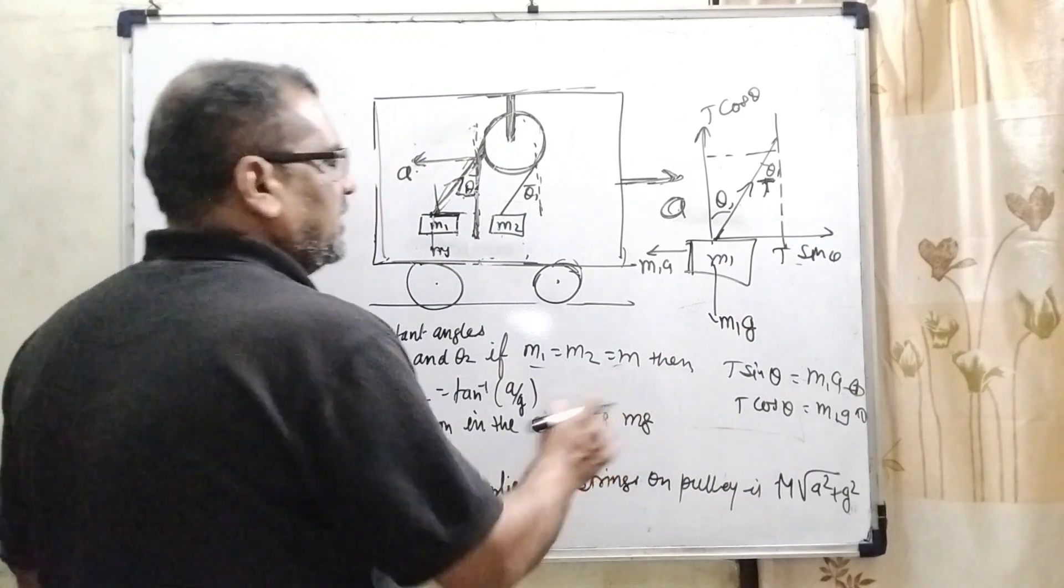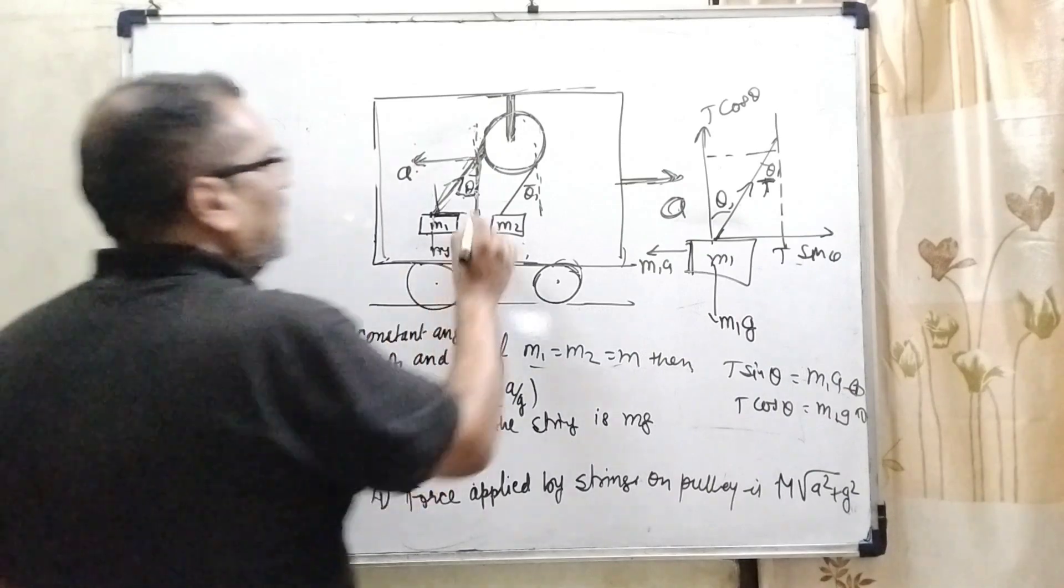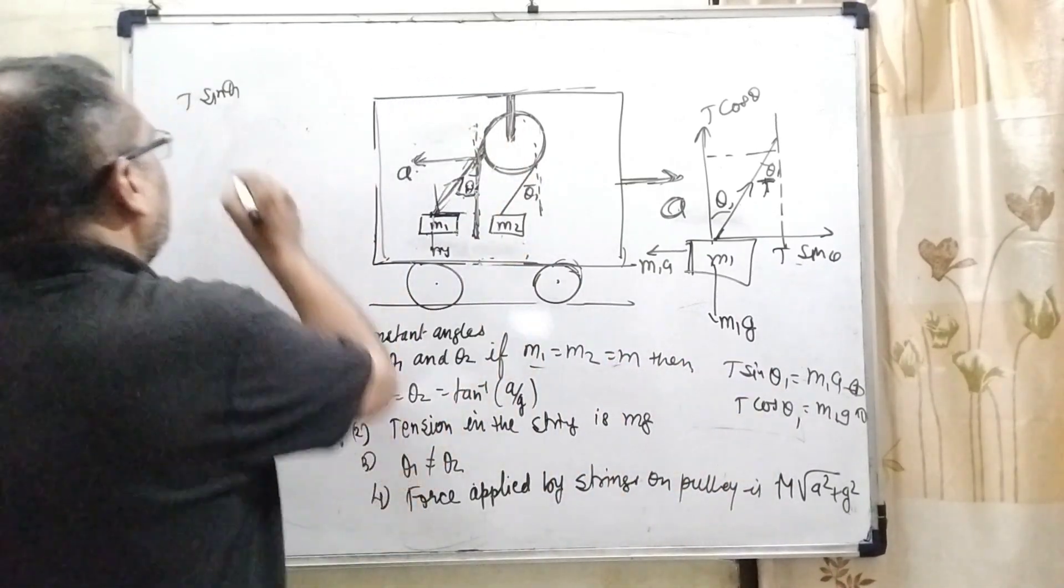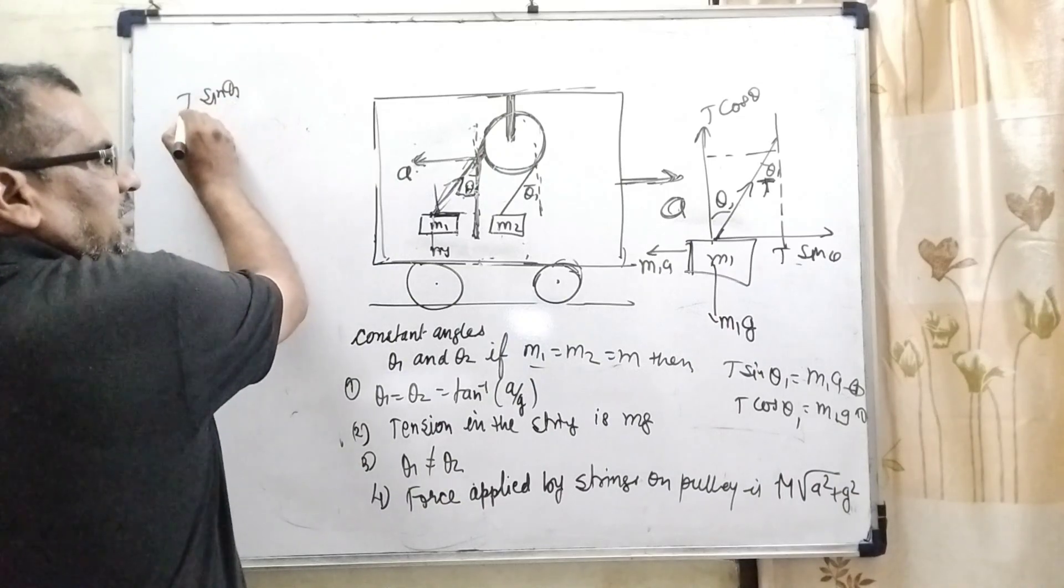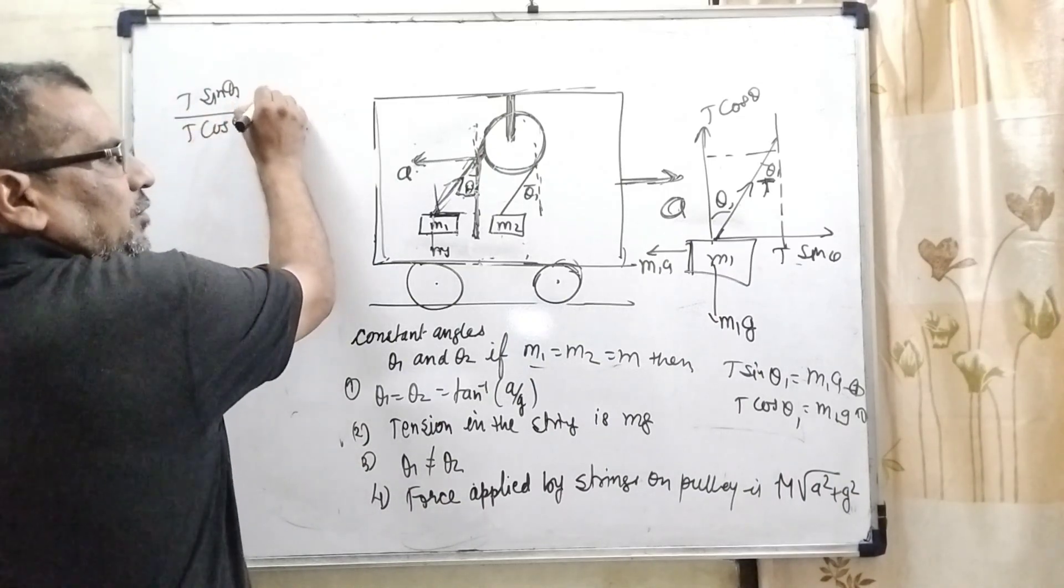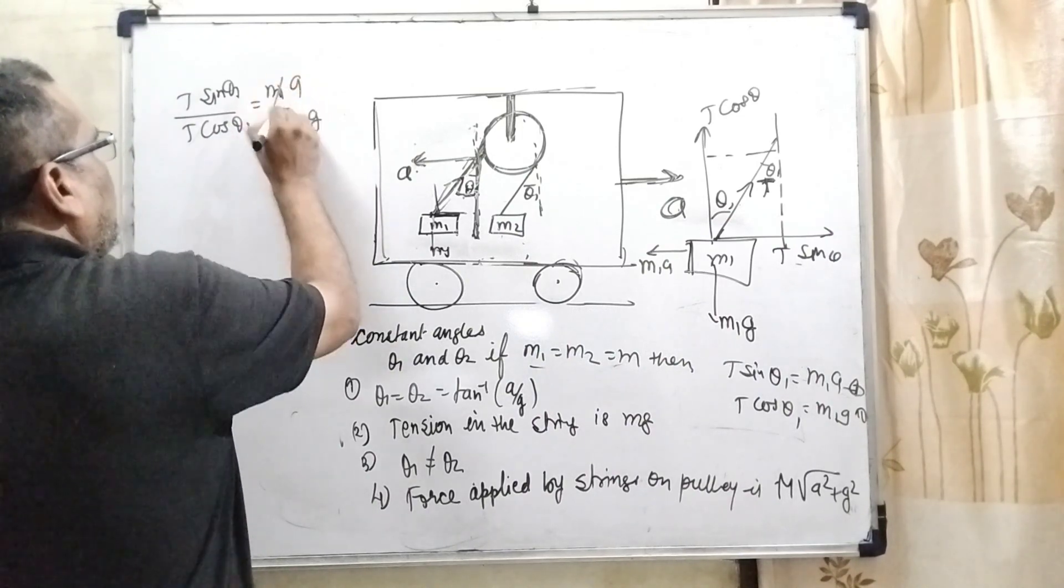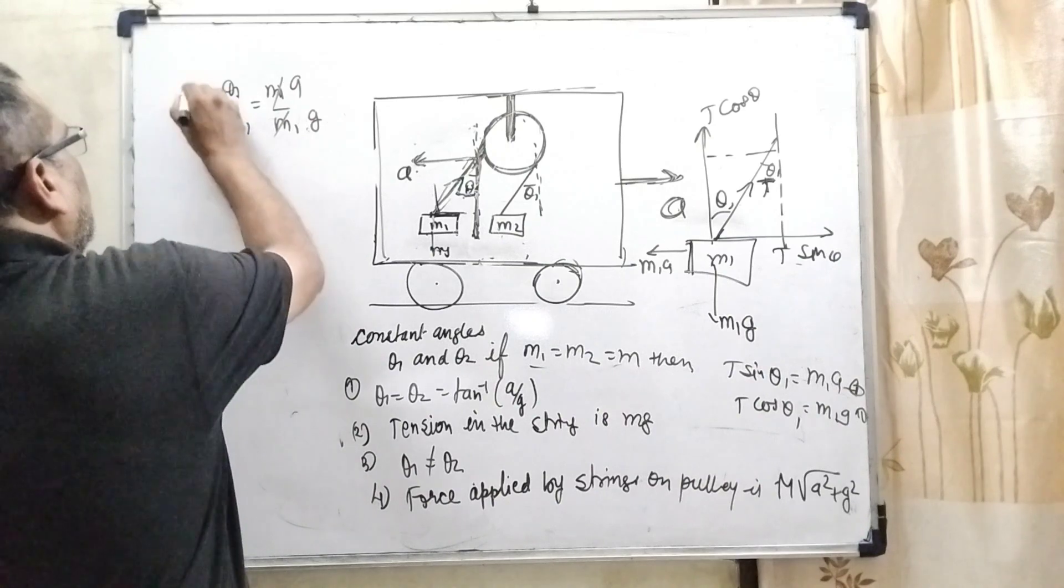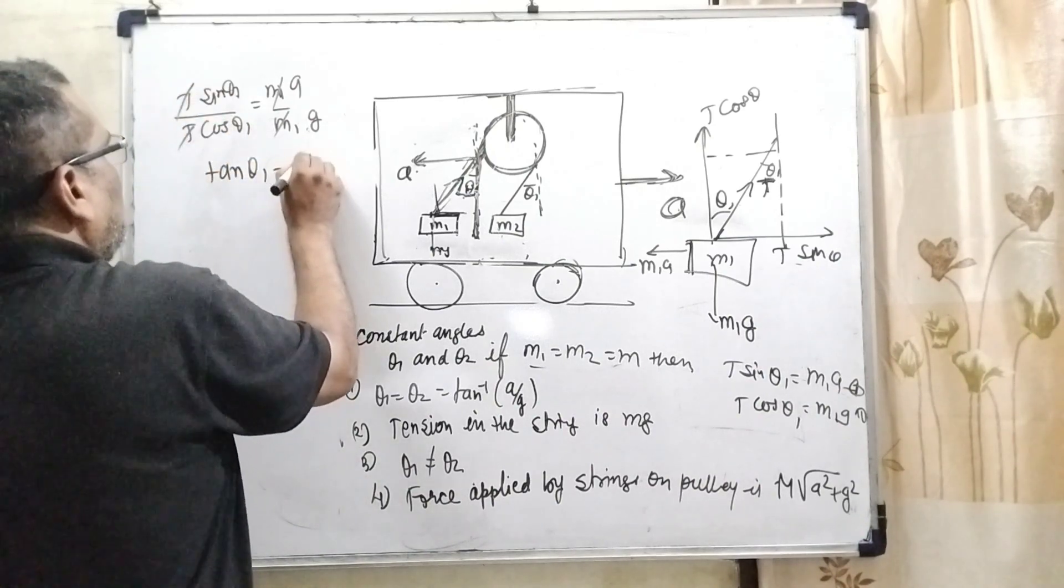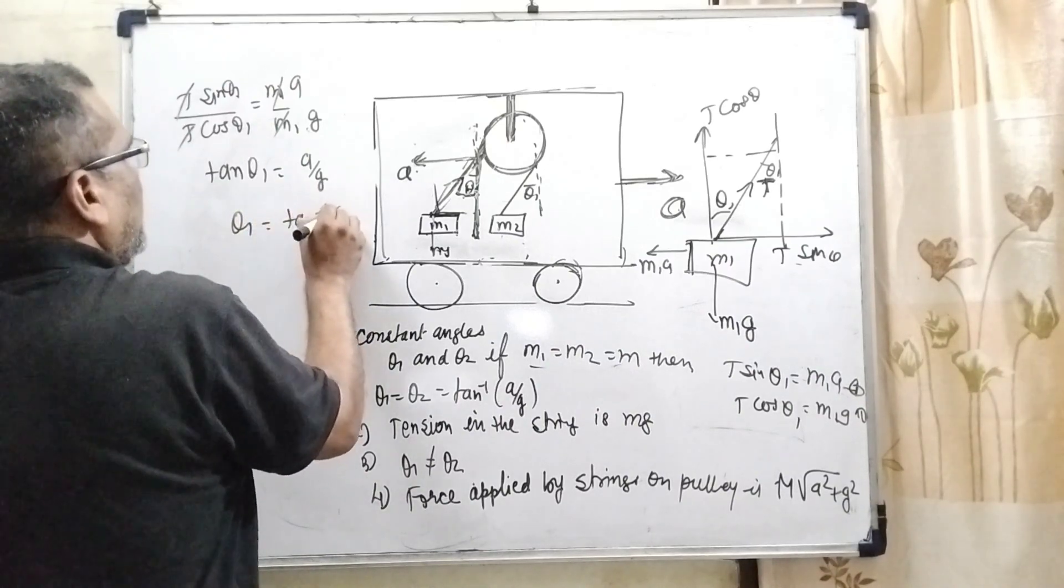Now dividing first by second: T sin theta1 by T cos theta1 equal to m1 a by m1 g. m1 cancels out, T cancels out. Then tan theta1 equal to a by g, so theta1 equal to tan inverse a by g.